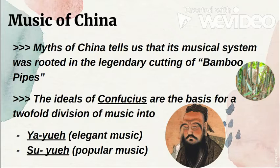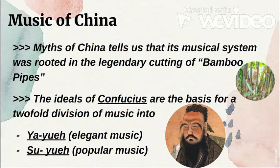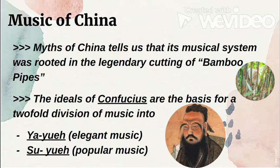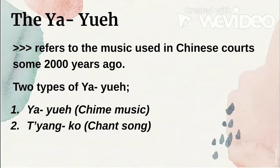The ideals of Confucius — a Chinese philosopher — are the basis for a two-fold division of music. First, we have Yayue, which is elegant music. The Suyue is popular music. So if asked what is the popular music of China, the answer is Suyue.